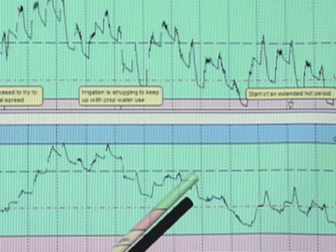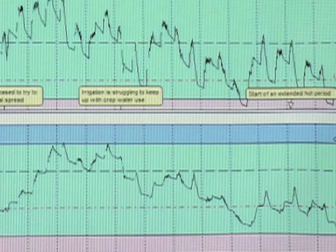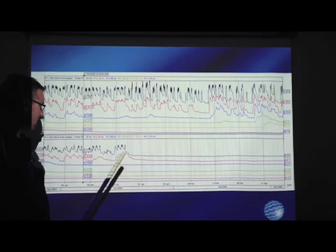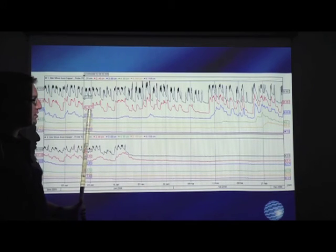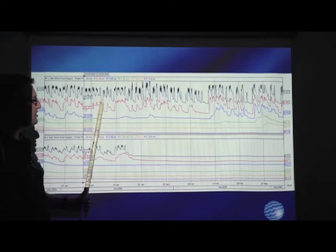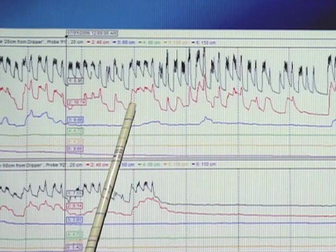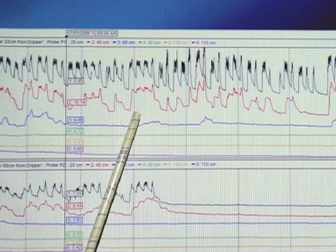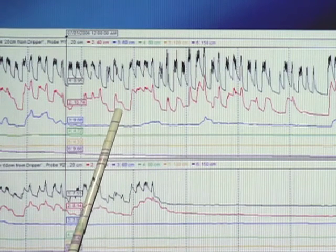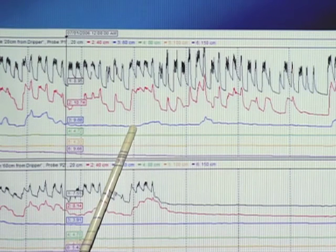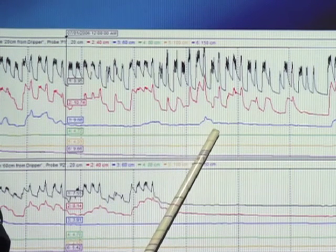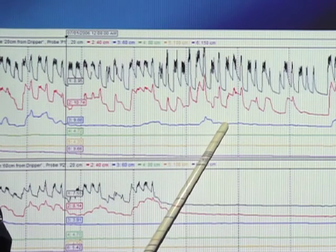This is in the lead up to the harvest period, into the new year. Irrigation strategy was still based on evaporation data and their crop factors, still under irrigating according to the soil moisture probes. We can see now we are struggling to get any irrigations to 60 centimetres. There's a couple of events which get to 60 centimetres directly below the dripper on the 20 centimetre probe.